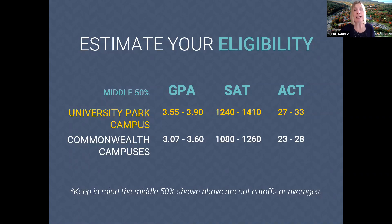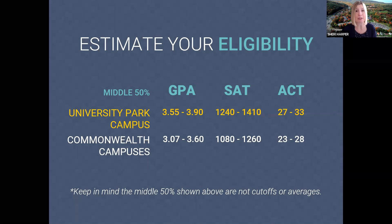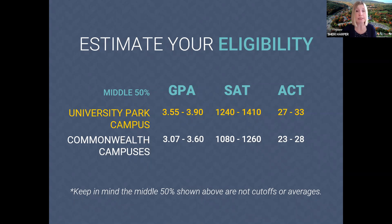When you complete the application, you'll list a first choice campus and an alternate choice starting campus. We always review you for your first choice initially — if eligible, we make that offer and stop there. If not admissible to the first choice, we then review the alternate choice campus. For students considering University Park as their first choice, there is also a summer start option to consider.